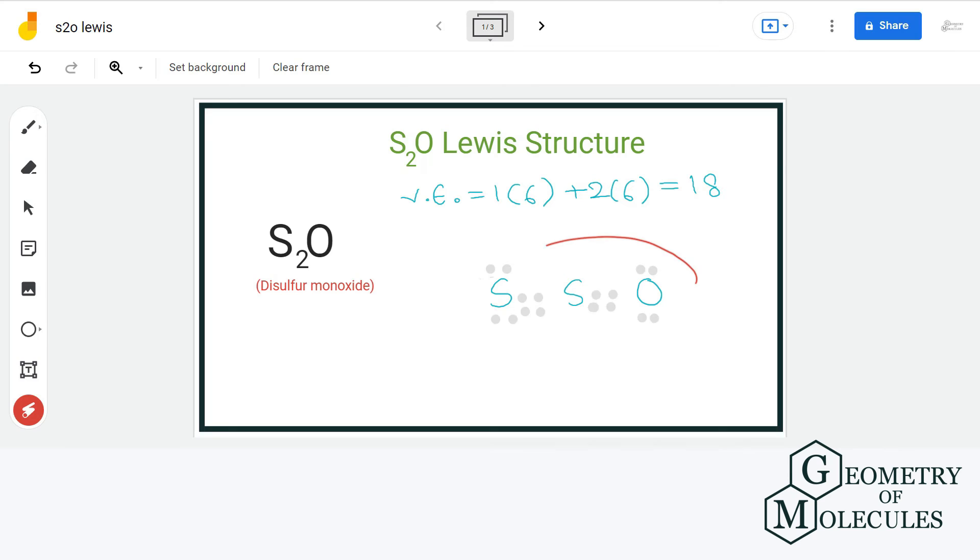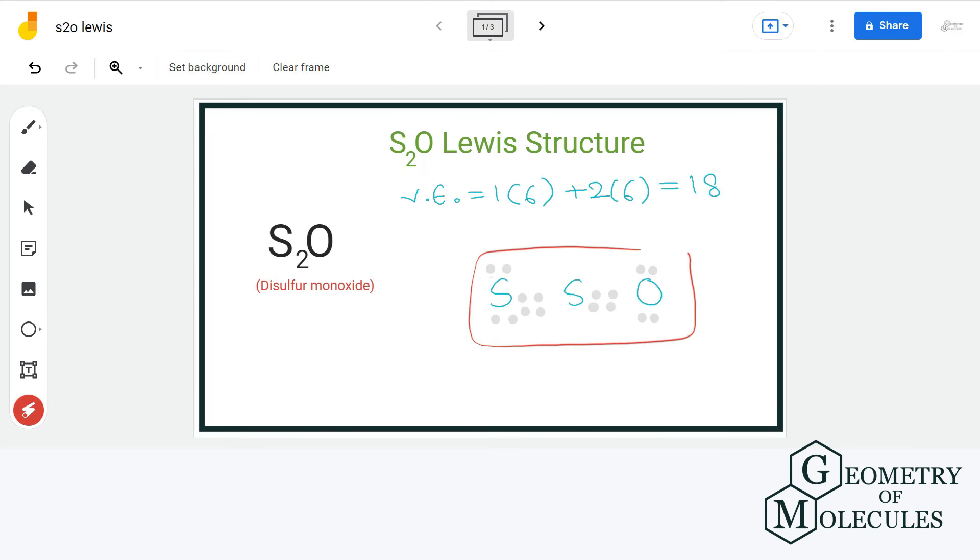Now each atom has a complete outer shell in this structure and zero formal charge. So this is the final Lewis structure of S2O.